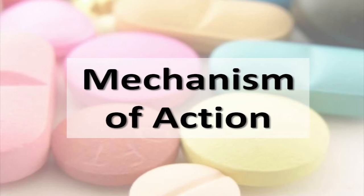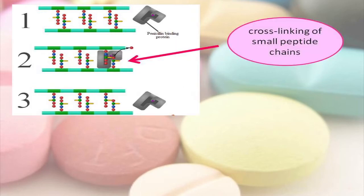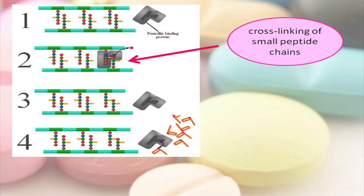The mechanism of action. As shown in the diagram, first, bacterial cell walls consist of a protective peptidoglycan layer which continuously undergoes remodeling. Second and third, the remodeling process involves breaking of the cross-linkage peptide chains and reforming of the peptide bonds. This action is performed by an enzyme called transpeptidase, which is also the penicillin binding protein.